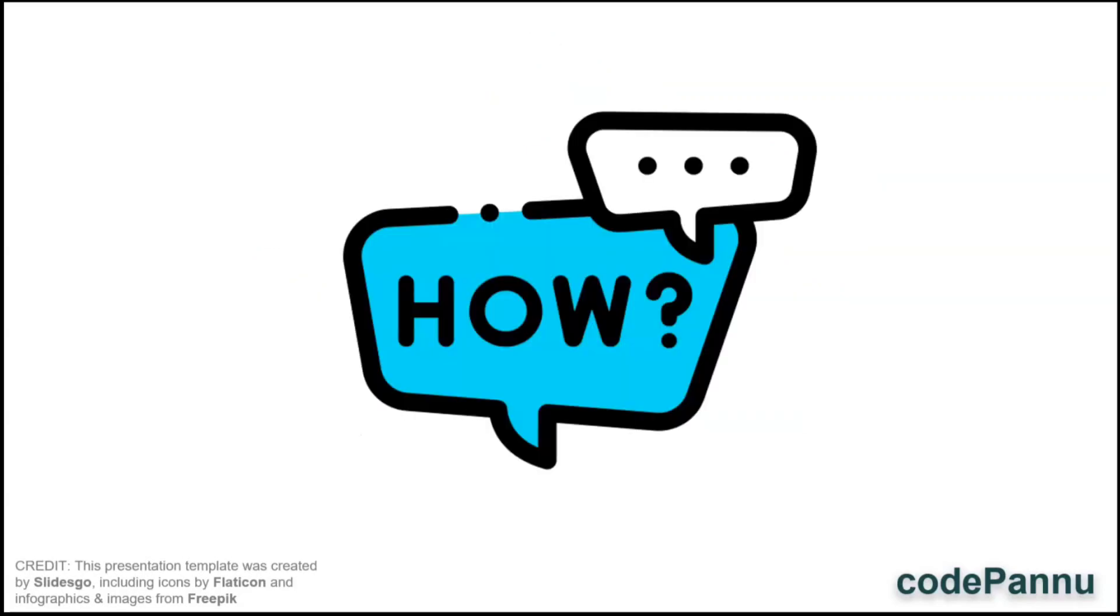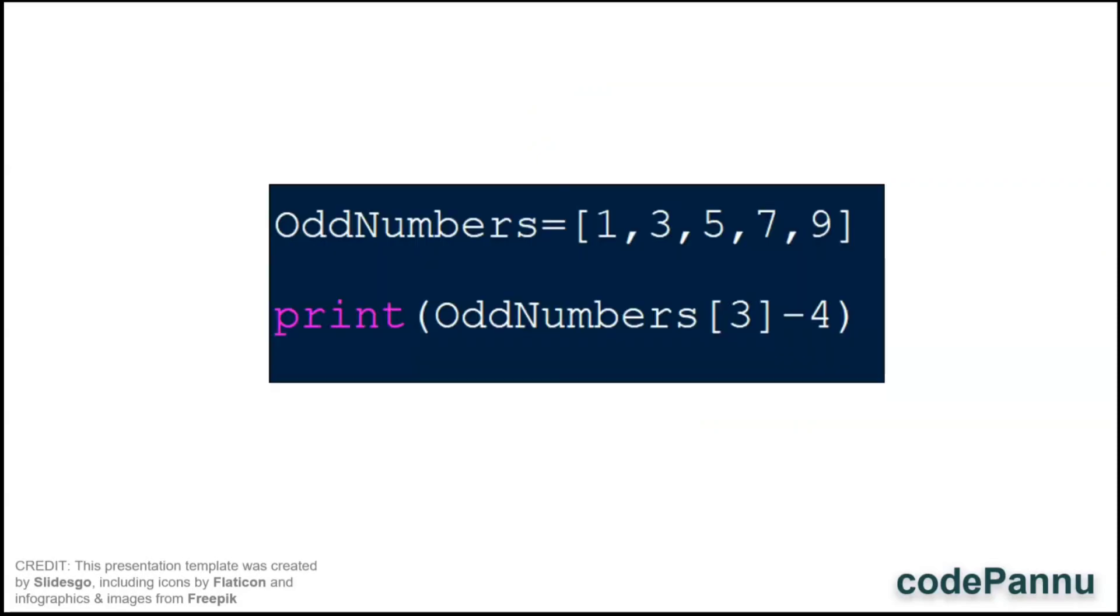So, how do we do it? First we should take the fourth item from the list called odd numbers, right? What is the fourth item? It is 7.